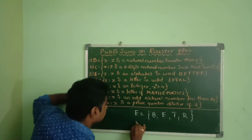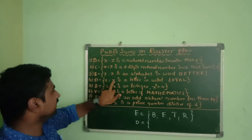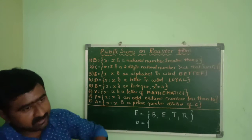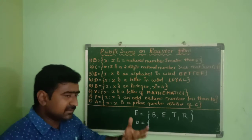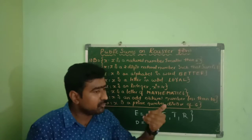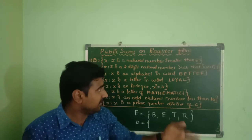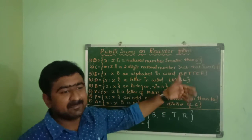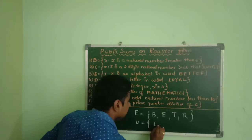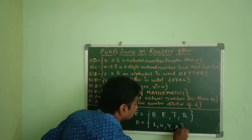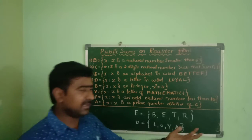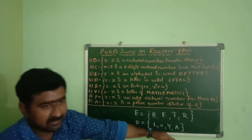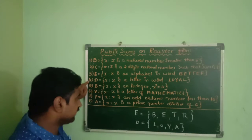Fourth sum: Set D where x is a letter in the word LOYAL. The spelling is L, O, Y, A, L — five letters, but L is repeated. In a set we do not repeat elements, so L is written only once. Therefore Set D = {L, O, Y, A}.